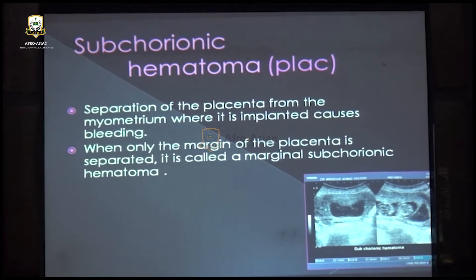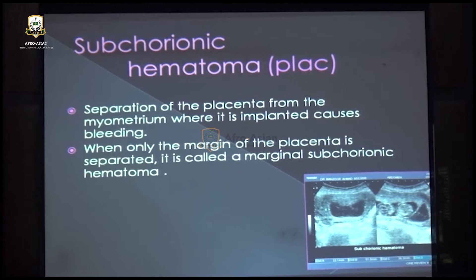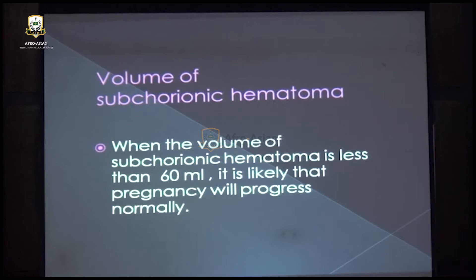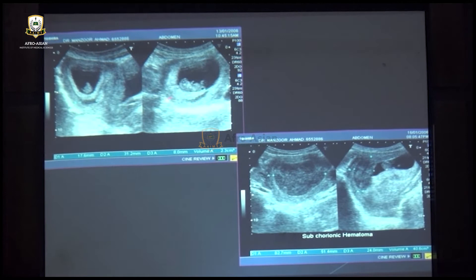The second placental cause is the subchorionic hematoma, which is separation of the placenta from the myometrium, appearing as a crescent-shaped anechoic area. We measure the volume; if it is less than 60 ml, the prognosis is good. But a massive subchorionic hematoma carries a poor prognosis and requires follow-up to monitor the pregnancy. Both small and large subchorionic hematomas can be seen alongside the pregnancy on ultrasound.